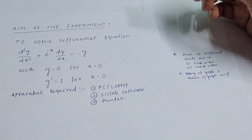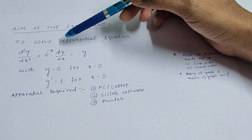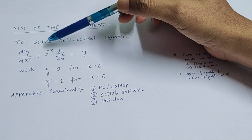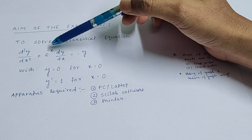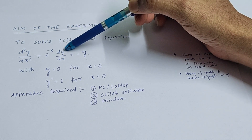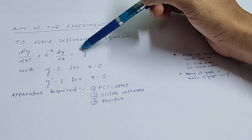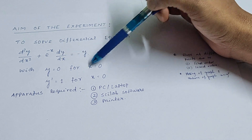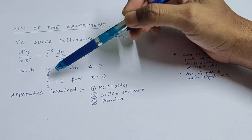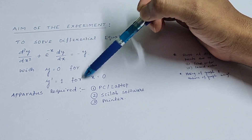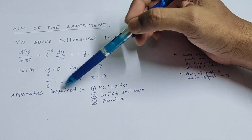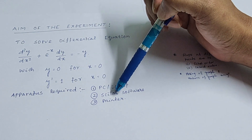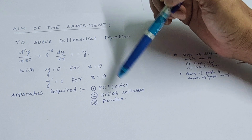The aim of the experiment is to solve the differential equation d²y/dx² + e^(−x) dy/dx = −y, with initial conditions y = 0 for x = 0 and y′ = 1 for x = 0. Apparatus required: PC or laptop, Scilab software, and a printer.